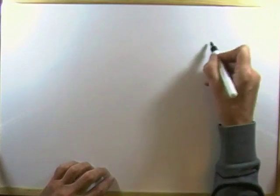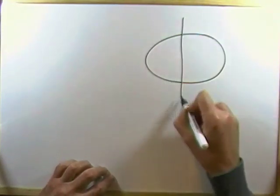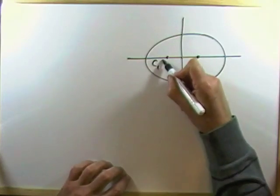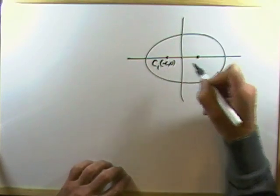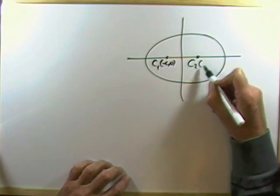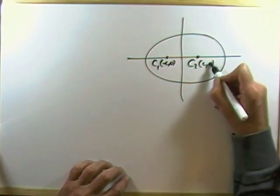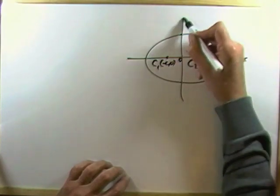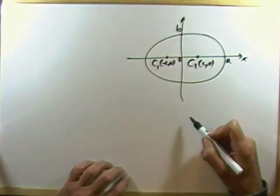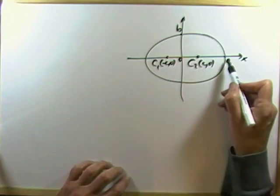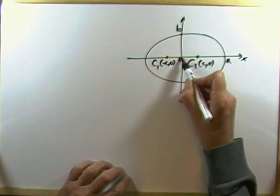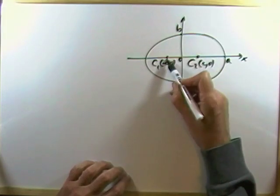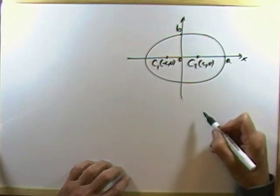So, if I have an ellipse, and I put my two fixed points here and here, call that c1, a distance c back from the origin, and this one c2, a distance c forward from the origin, and let it intersect the x-axis at a, and the y-axis at b, then the total distance involved is going to be, well that's a minus an amount c, and that's a plus an amount c, so the total distance is going to be 2a.